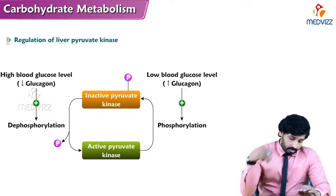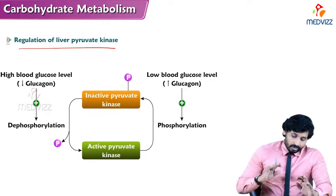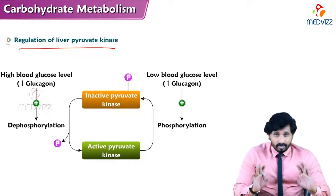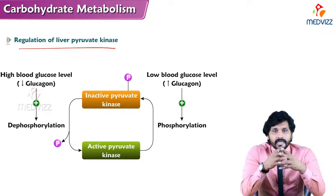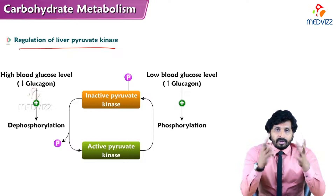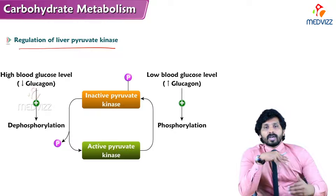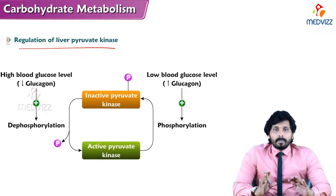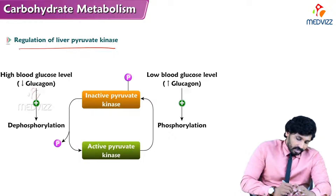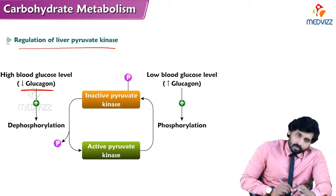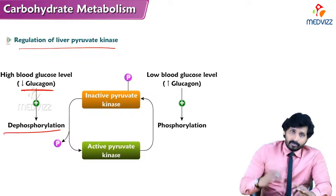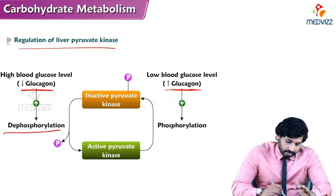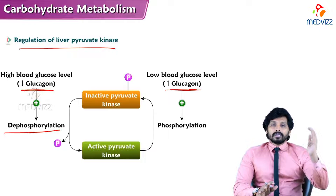The third regulated step is pyruvate kinase in the liver — similar to PFK2, it behaves as a dimer. Inactive pyruvate kinase is in the phosphorylated state and active pyruvate kinase is in the dephosphorylated state. Insulin increases protein phosphatase, which dephosphorylates pyruvate kinase to its active form, allowing glycolysis to proceed. Glucagon phosphorylates and inactivates pyruvate kinase, stopping glycolysis.